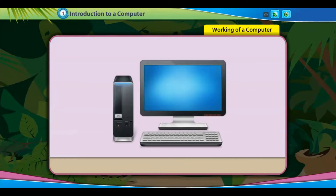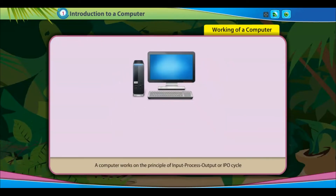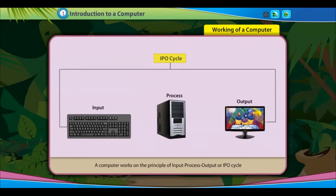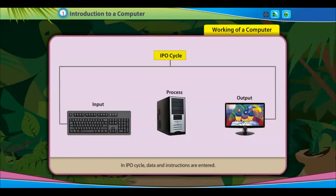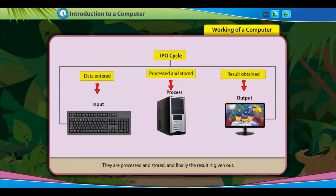Working of a Computer. A computer works on the principle of Input Process Output, or IPO Cycle. In the IPO Cycle, data and instructions are entered, they are processed and stored, and finally the result is given out.